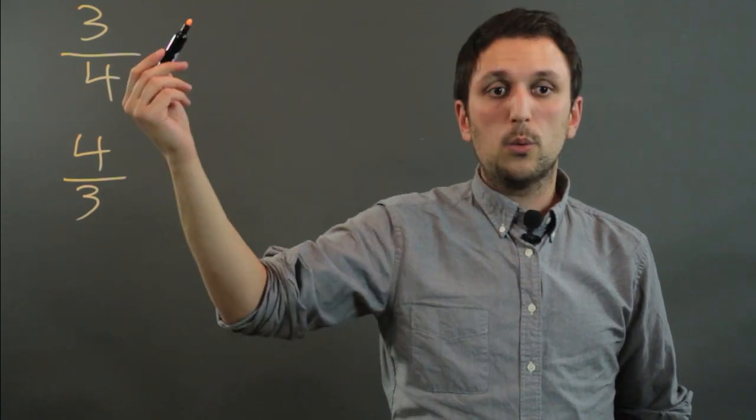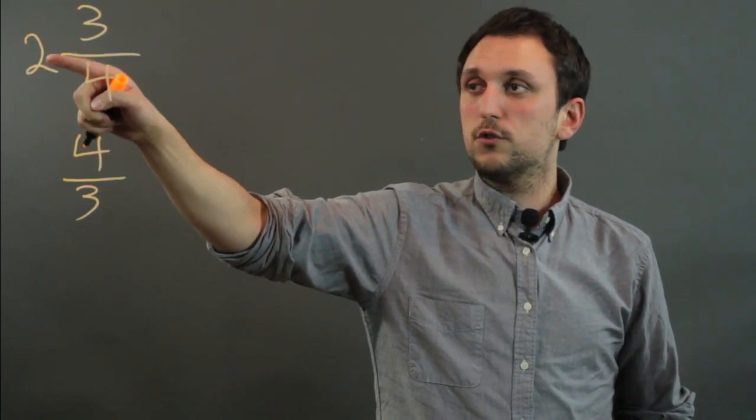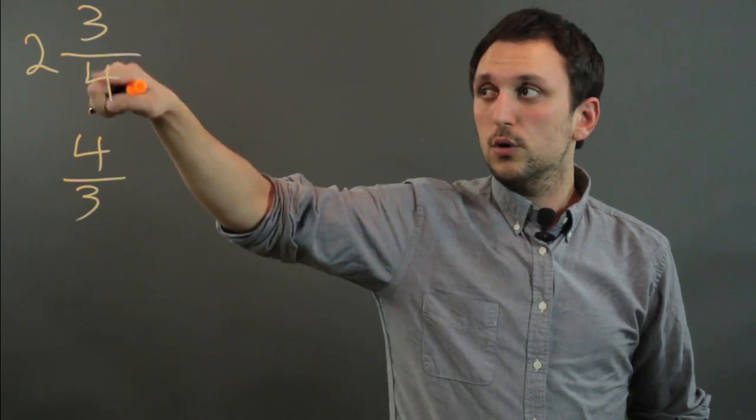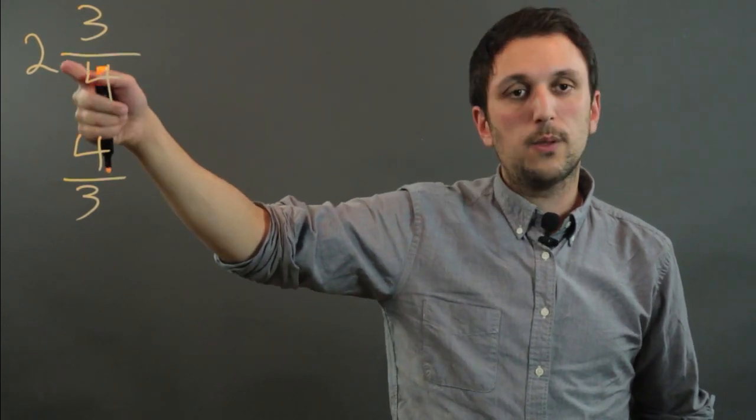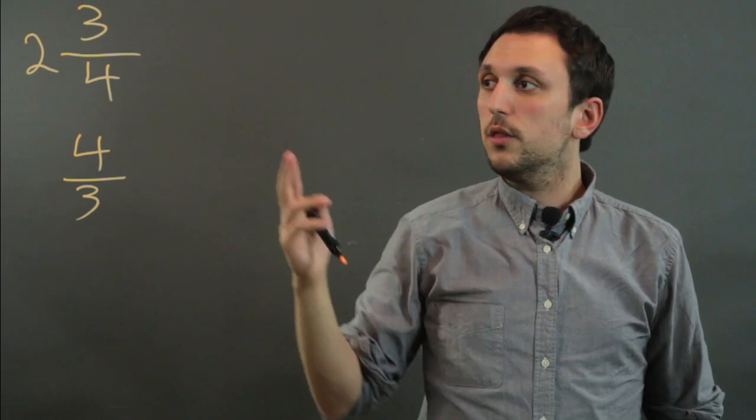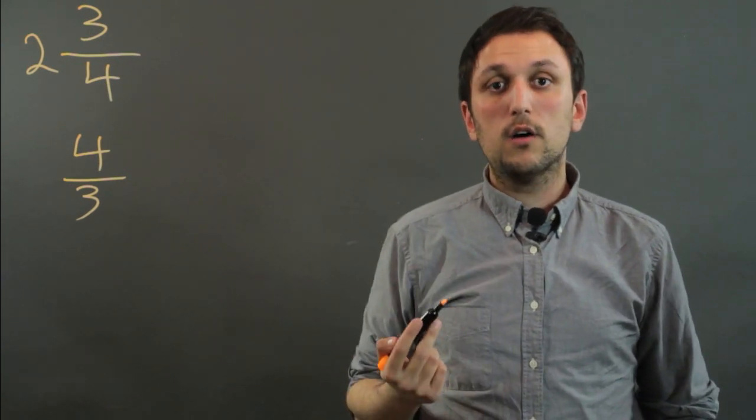Now if we have say 3 fourths, but we put a 2 before it, so it's 2 and 3 fourths, even though this looks like a proper fraction, it's actually now called a mixed fraction. So these are about seven facts of proper fractions.